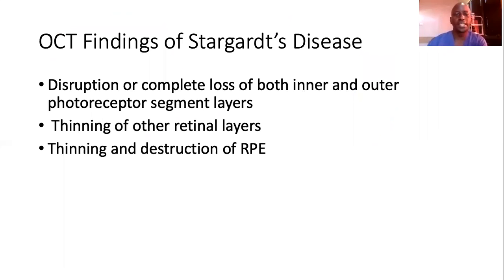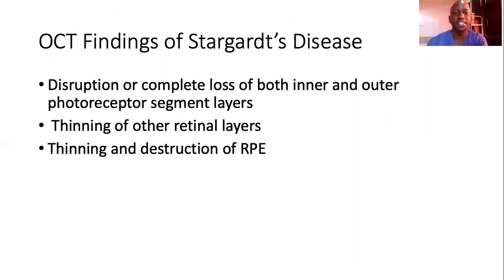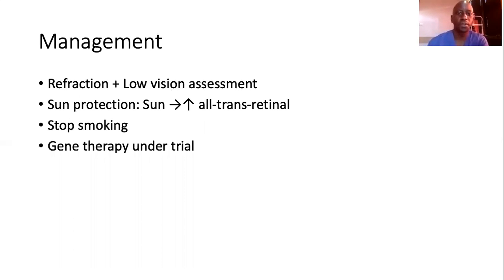In summary, the OCT findings of Stargardt's disease are quite characteristic. As cases get worse, you have more and more disruption of the retina, involving both inner and outer segments of the photoreceptors. In more advanced cases, you have thinning of other retinal layers, and in very advanced cases with destruction over many years, thinning and destruction of the retinal pigment epithelium and into the inner layers of the choroid.